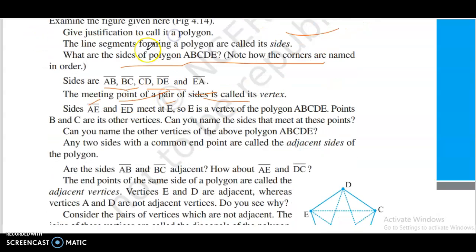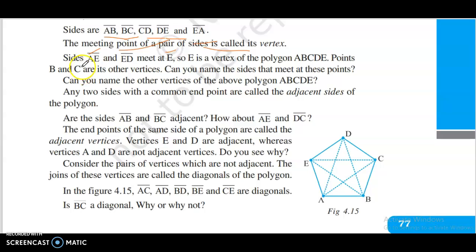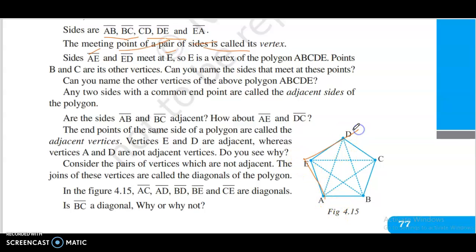Sides AB, BC, CD, DE, and EA. The meeting point of a pair of sides is called its vertices. Sides AB and ED meet at E, so E is a vertex of the polygon ABCDE. Points B and C are vertices. Can you name the sides that meet at this point?